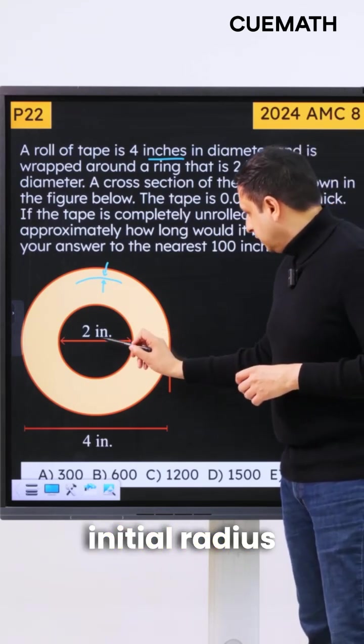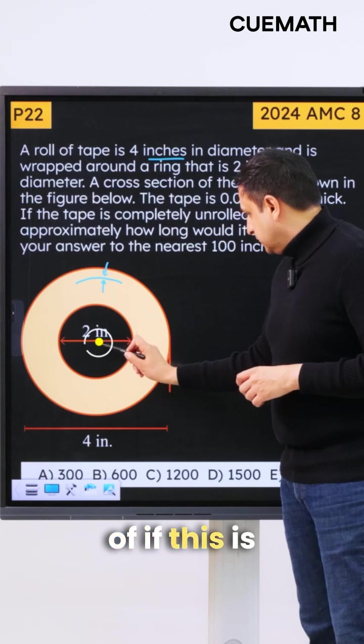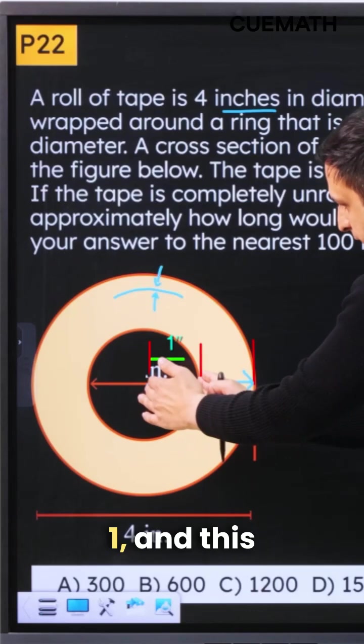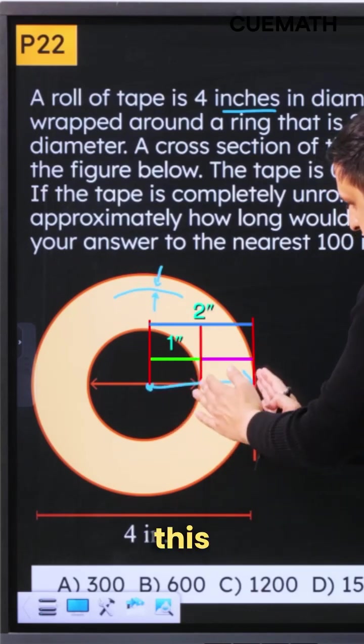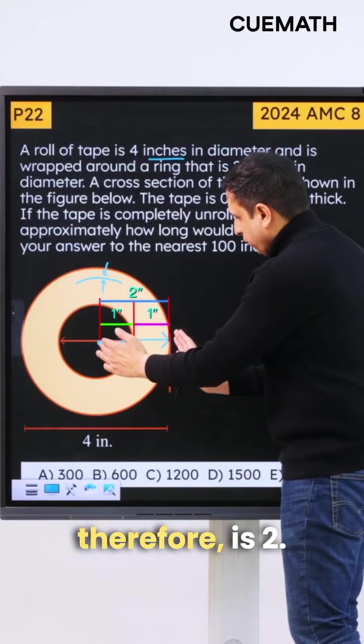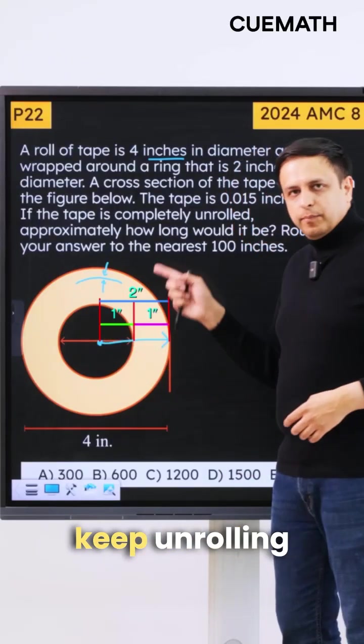So we start off with an initial radius of, if this is the center here and this distance here would be how much? This would be 1 and this would be 2. So therefore this thickness is 1 over here and the original radius therefore is 2.